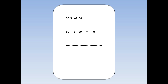And now we find 30%. 8 times 3 is 24. Next, we find 5%. And to do that, we divide 10% by 2. 10% was 8. 8 divided by 2 is 4.